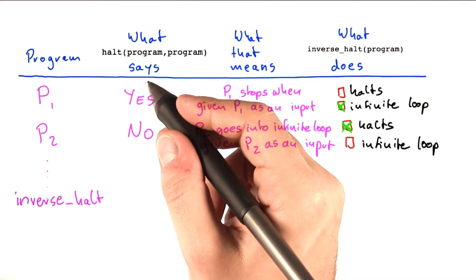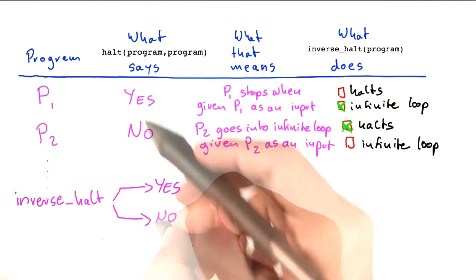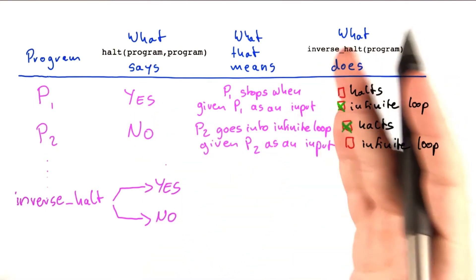So if inverse halt is run on itself, there can only be two cases, right? Halt can either say yes or no. We know it has to be one of the two cases because there's no other possibility.